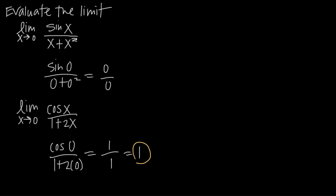Applying L'Hôpital's rule doesn't affect the validity of this answer — this is the limit of the original function even though we used the rule to replace the numerator and denominator with their derivatives. The great thing about L'Hôpital's rule is that if we had gotten 0 over 0 or another indeterminate form again, we can continue applying it as many times as needed until evaluating at the limit gives a real number answer. That's how you use L'Hôpital's rule to evaluate a limit.